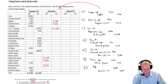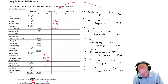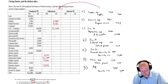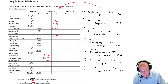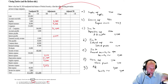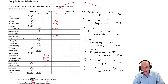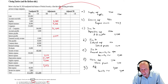Debit interest expense, credit interest payable, $1,250. There's my interest expense, there's my interest payable. I almost did $2,150 — good way to mess up a problem, just transpose two numbers. Debit unearned security revenue, credit security revenue, $10,000. Debit unearned security revenue $10,000.